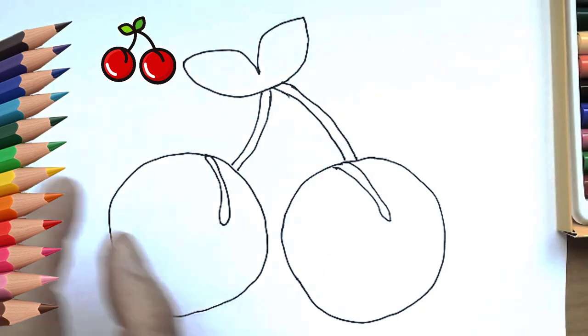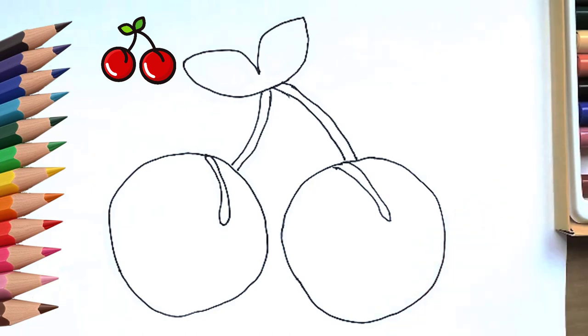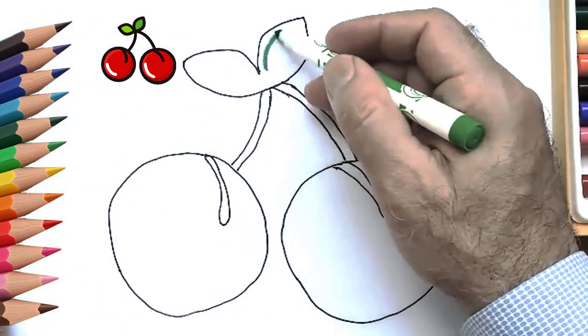Now draw a branch for the second cherry, and on the twigs draw two leaves. It's time to paint our cherries.